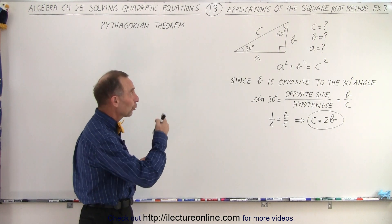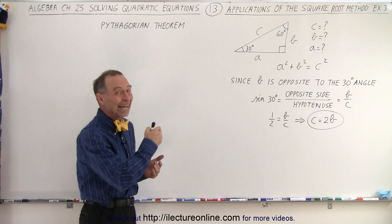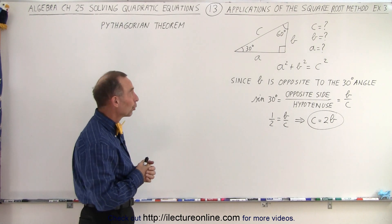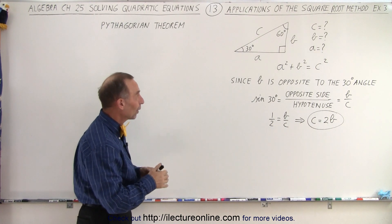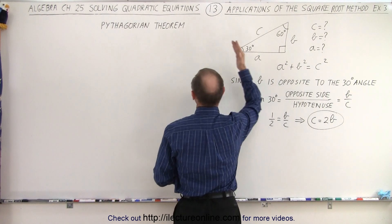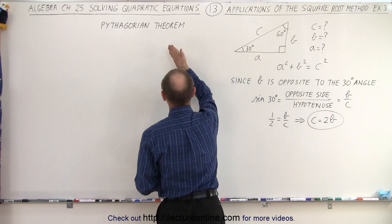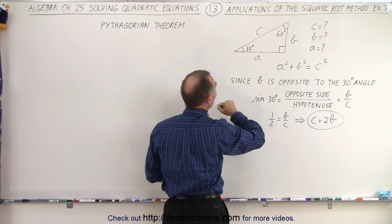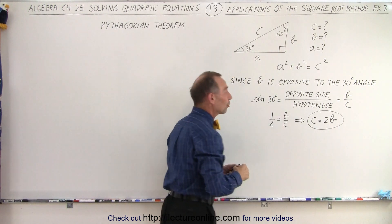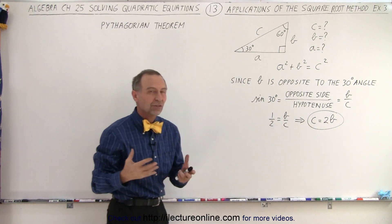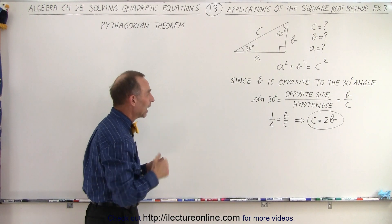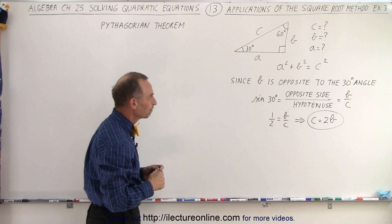Here we have what we call a 30-60-90 degree triangle. Since one of the angles is a right angle, we can use what we call the Pythagorean theorem, where we know that a squared plus b squared equals c squared. The sum of the squares of the sides equals the hypotenuse squared.